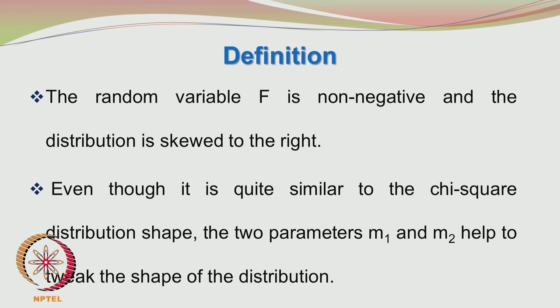These two parameters M1 and M2 may be changed to change the shape of the distribution. In certain cases, you may want to fit a probability distribution to your experimental data to see from which family of populations your data is fitting. If you have two parameters, you have more flexibility to fit the curve to the experimental data points. So M1 and M2 help to tweak the shape of the distribution.